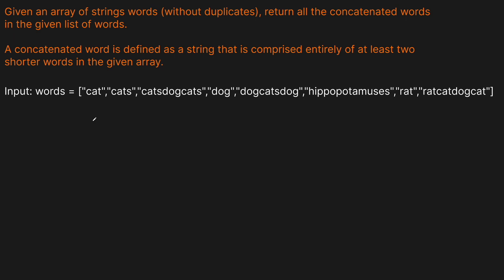So let's go through the words and see if we can actually build them from at least two other words. Cat — that's a single word, we can't really do anything with it. Cats — we could break it up with 'cat', but we don't have just an 'S', so that doesn't work.